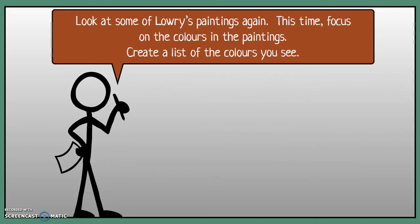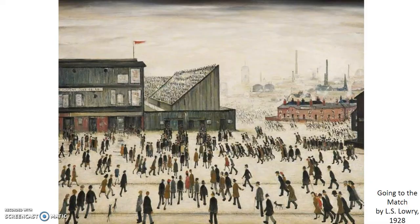Now on the website you'll find a link with lots of examples of L.S. Lowry's paintings. And I want us to take a look at those paintings again. But this time I want us to focus on the different colours that L.S. Lowry uses. And I want you to create a list of all those different colours. Here we can see 1928's Going to the Match by L.S. Lowry. What colours can you see on this?